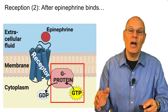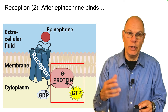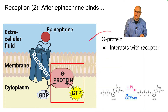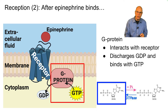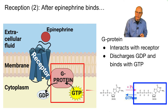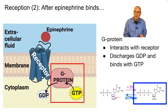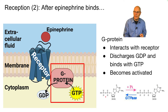What's the effect on the G protein of epinephrine binding with the receptor? The G protein is then able to interact with the receptor. The receptor has changed on its cytoplasmic side, which enables the G protein to interact with that part of the receptor, causing the G protein to discharge GDP — the low-energy form — and bind with GTP, the high-energy form. Notice that GTP has three phosphates, just like ATP, while GDP only has two, like ADP. The result is that the G protein now becomes activated.